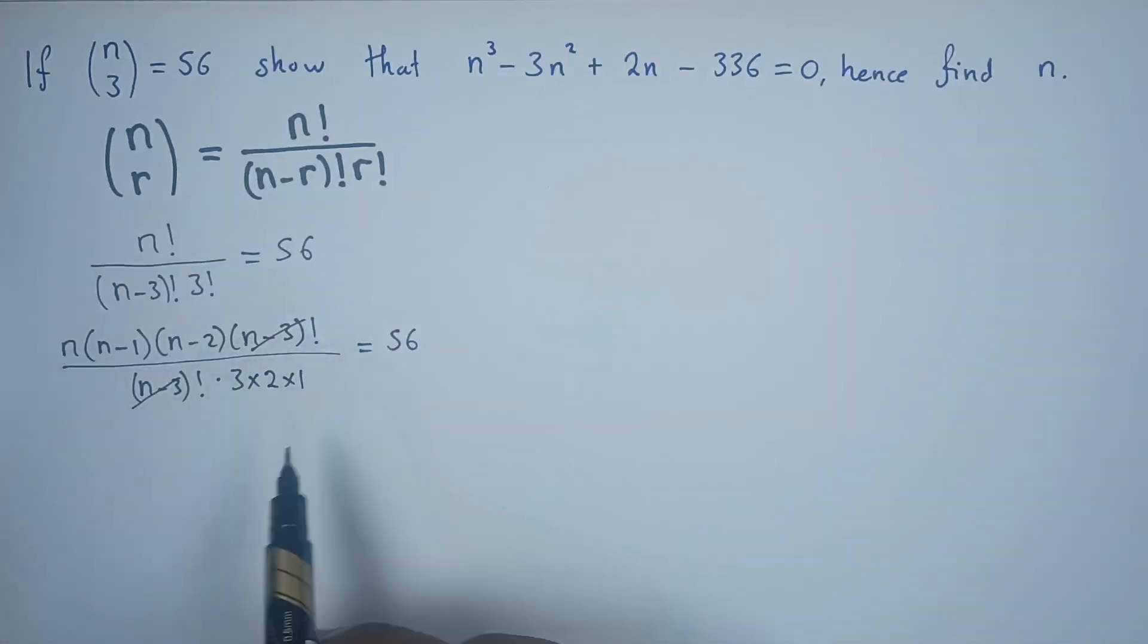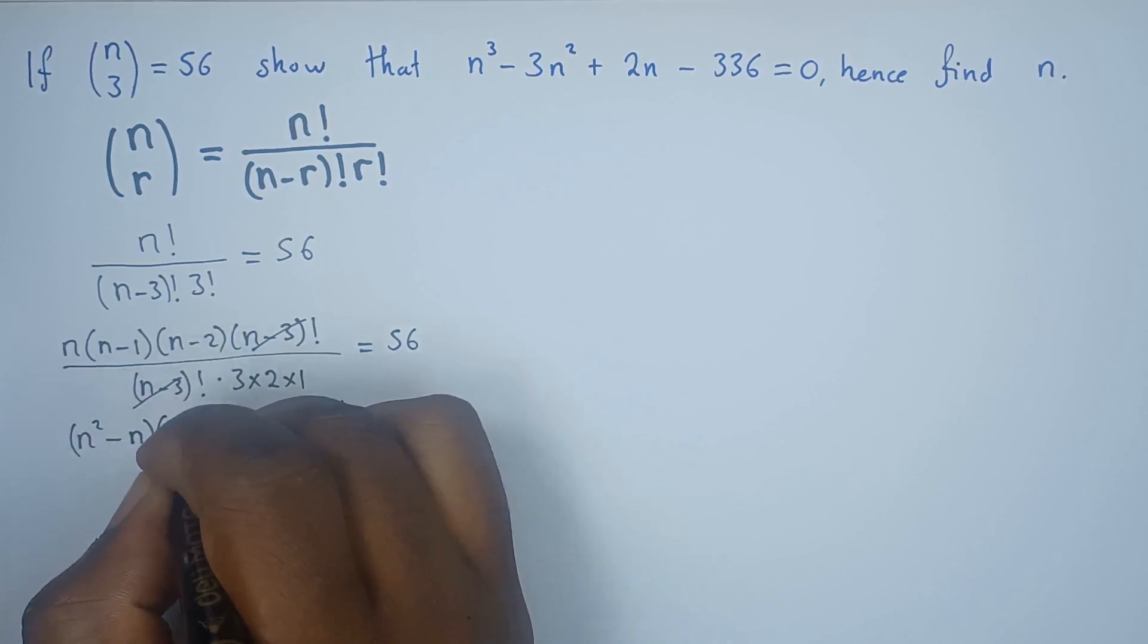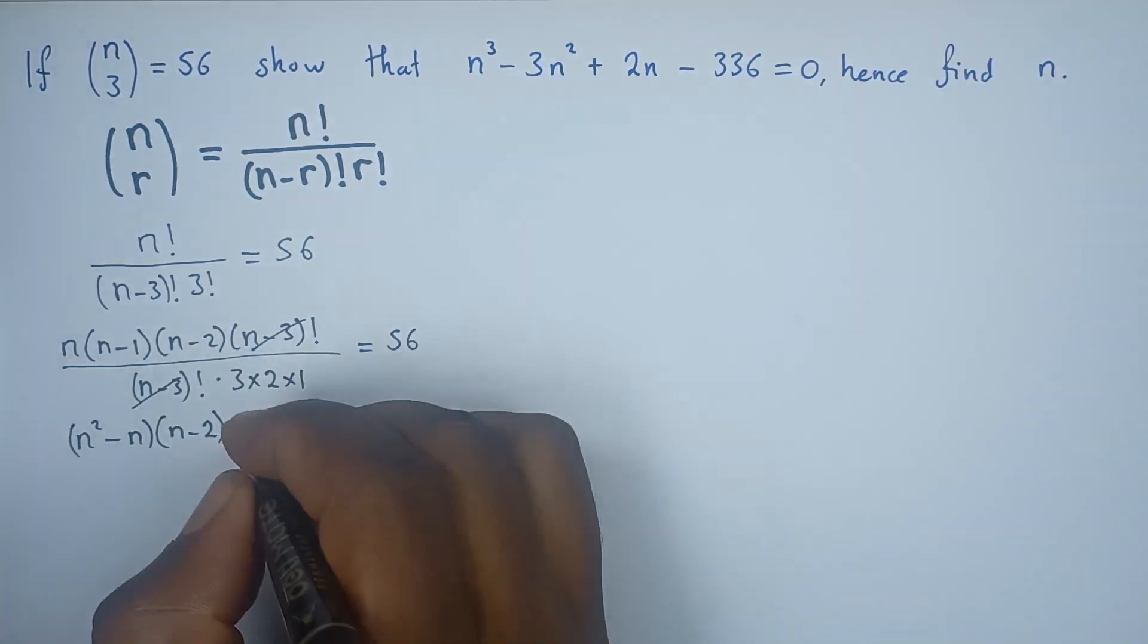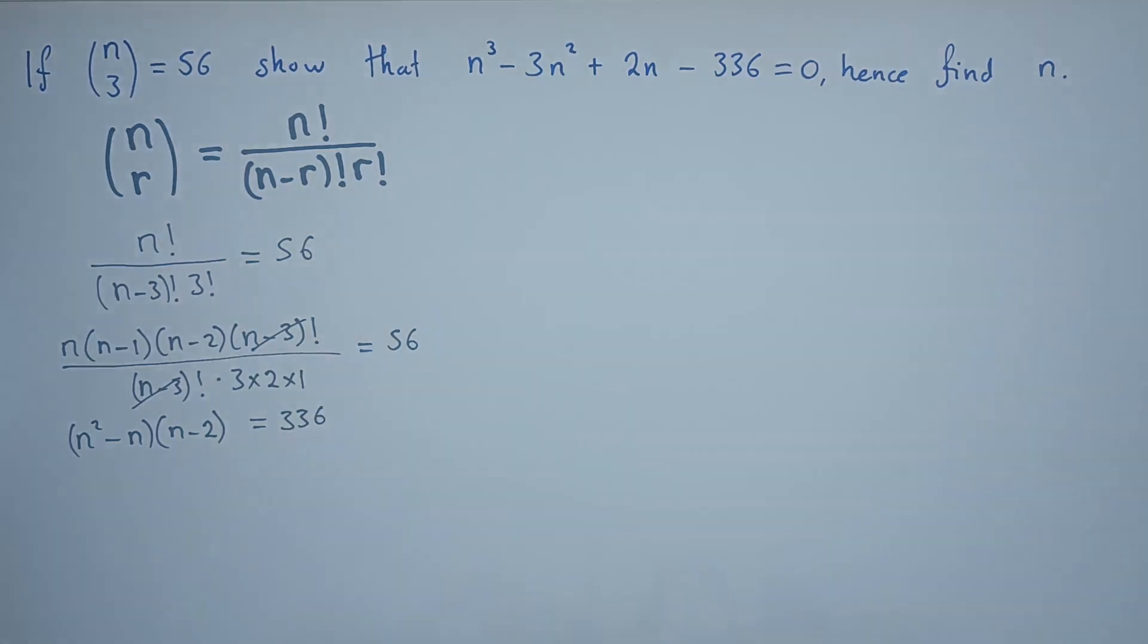Let's expand in the numerator. So n times n will give us n². n times -1 is -n. Then we have n-2. This is 6. If it multiplies with that, we'll get 336.